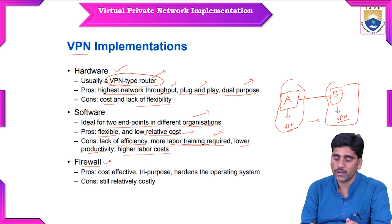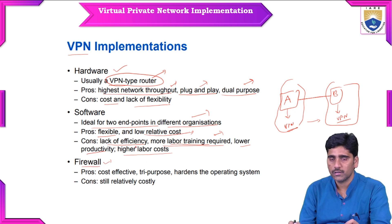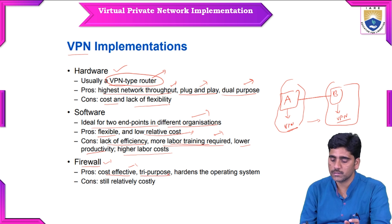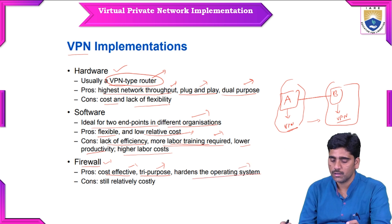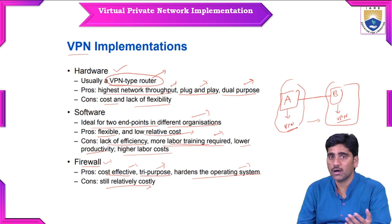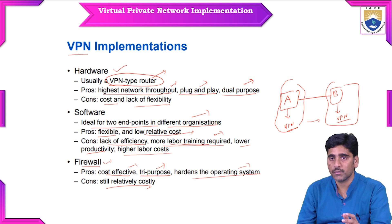The next requirement is a firewall. For implementing VPNs using firewalls, the advantages are that it is cost-effective, tri-purpose, and it hardens the operating system. The consequence is that it is still relatively costly. These are the hardware and software requirements for Virtual Private Network implementation.